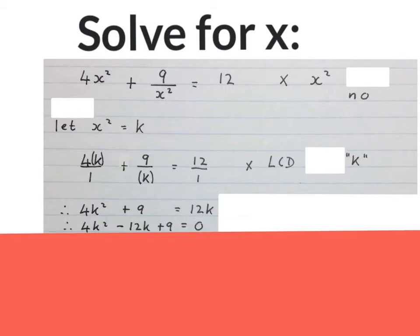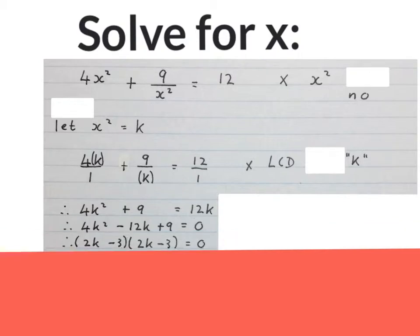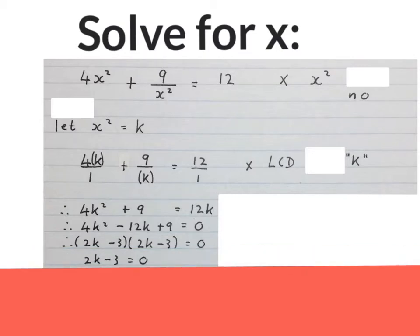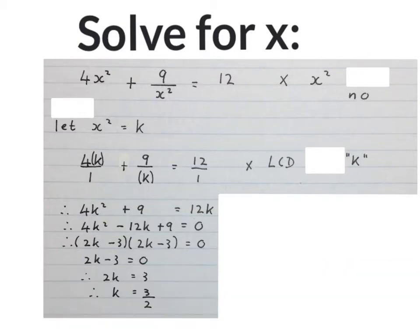Now we have a normal quadratic equation. Everything to one side, equate it to 0. Factorize it or use the quadratic formula to find the value of K. If you use this method of factorizing, you can write 2K minus 3 equals to 0 and solve for K. And your final answer of K will be 3 over 2.